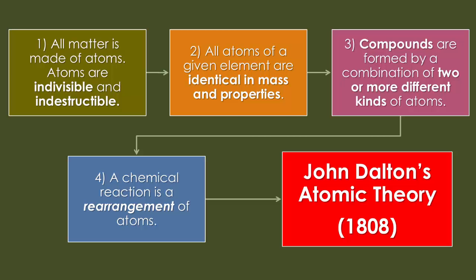He also believed that all atoms of a given element are identical in mass and properties. He also believed that compounds are formed from a combination of two or more different kinds of atoms, and he believed that a chemical reaction is a rearrangement of atoms. These four main topics are what we call John Dalton's atomic theory.